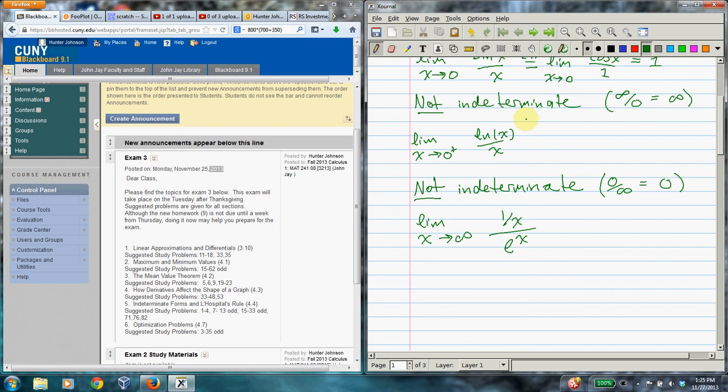So be careful not to get psyched out. Just because you see a quotient doesn't mean that you can use L'Hopital's Rule. So for instance, this one, you have natural log on top and x on the bottom, and you're letting x go to 0 from the positive side, which you have to, just because the domain of natural log is only positive numbers.